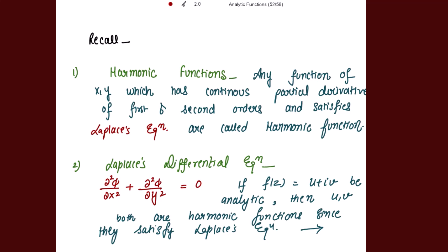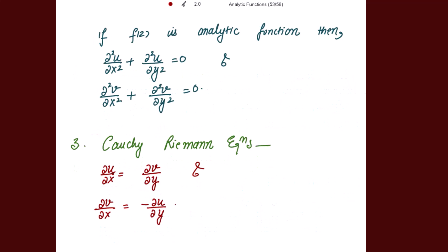If f(z) = u + iv is analytic, then u (the real part) and v (the imaginary part) are both harmonic functions, since they satisfy Laplace's equation. That is: ∂²u/∂x² + ∂²u/∂y² = 0, and ∂²v/∂x² + ∂²v/∂y² = 0. Both u and v satisfy Laplace's equation, provided f(z) is an analytic function.